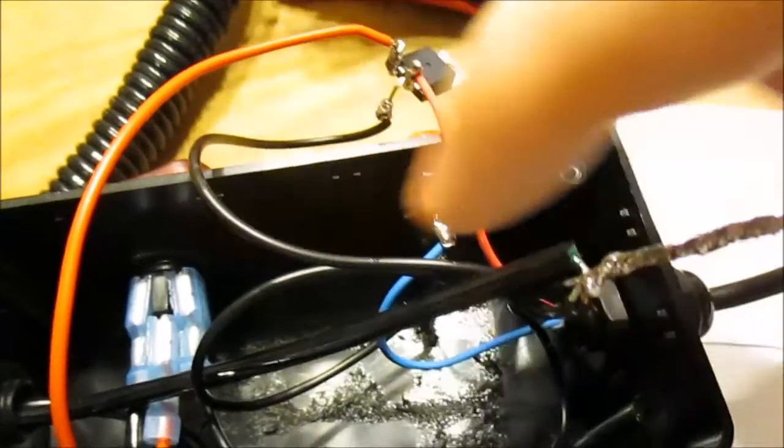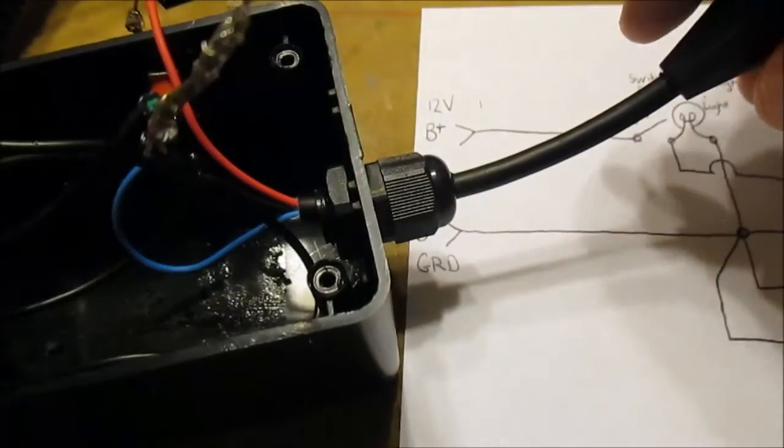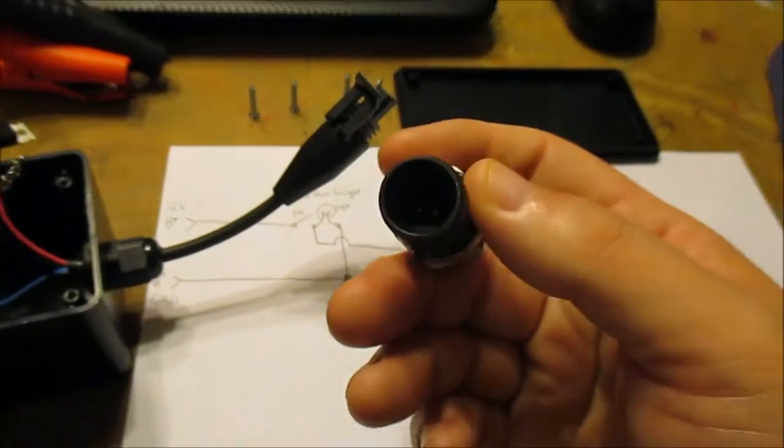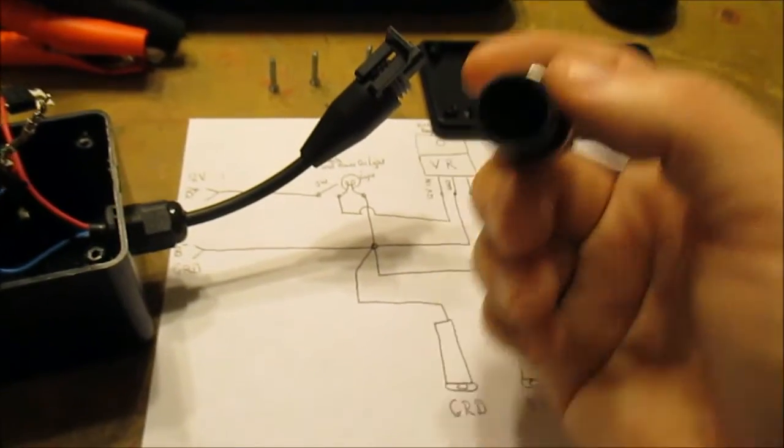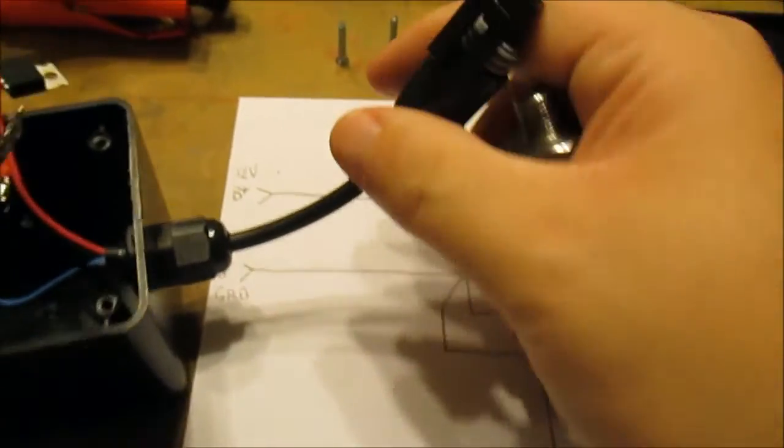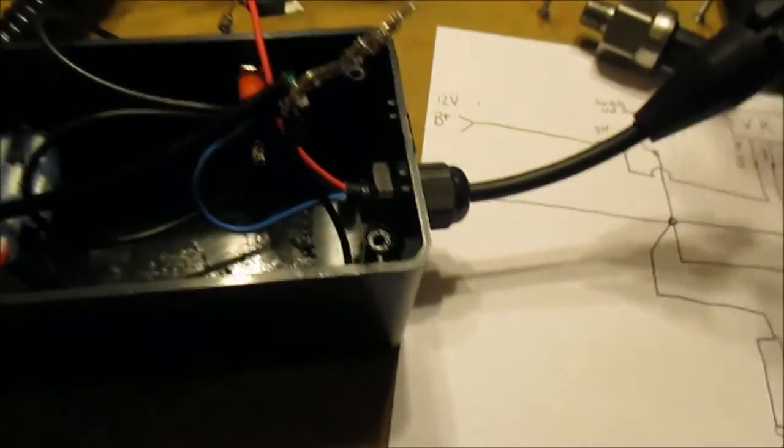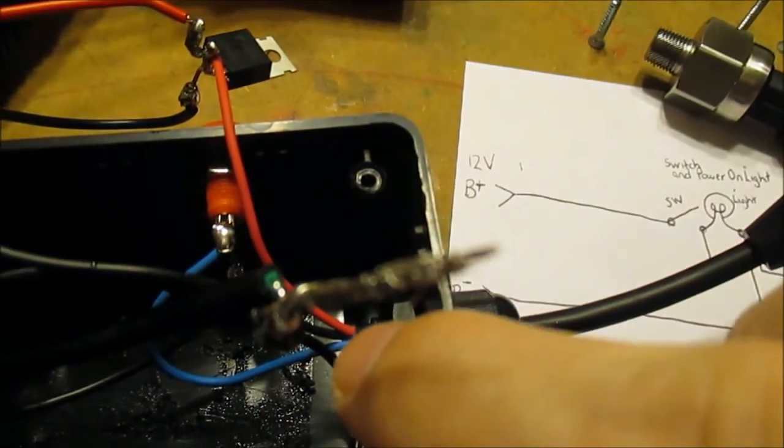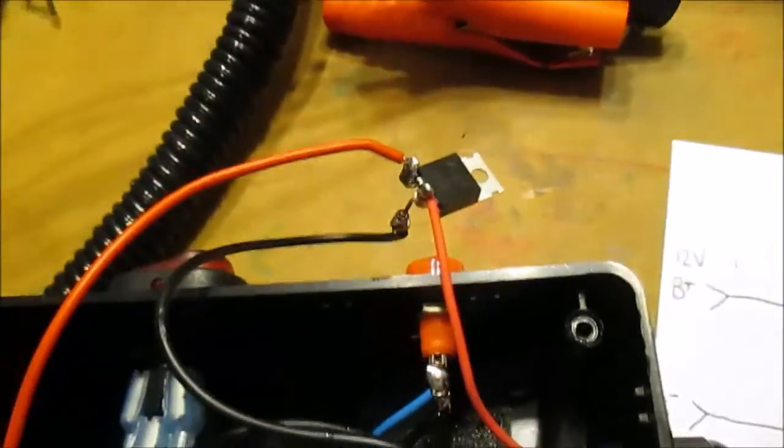This voltage regulator has the power in, the regulated power out, and it also needs a ground, so this ground comes back to this bundle. Then my pressure transducer - once I snap this in, there's a connector in there. It's keyed, there's three wires. This has the 5 volts coming in, the black wire is a ground wire, the blue wire is a signal wire.